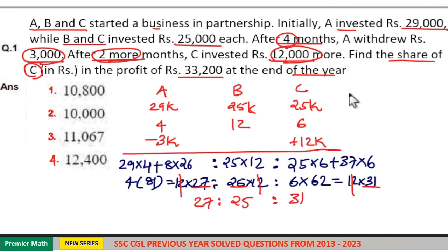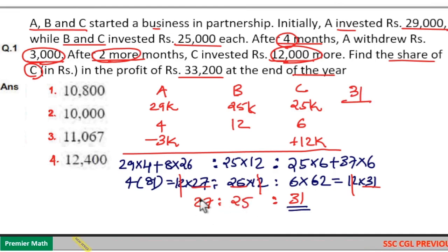So C's share is equal to 31 part. Out of total is equal to 25 plus 27, 52, 52 plus 31, 83. So C's share is equal to 31 over 83 into total profit is 33,200.